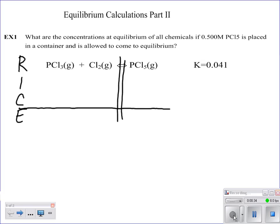And we read through it. It says, what are the concentrations at equilibrium of all chemicals if 0.5 molar PCl5 is placed into a container and is allowed to come to equilibrium. So I know that information, and I know my K value, and that's it. So from this, I can easily come up with my other initial concentrations. Nothing. I've got 0 of my chlorine and my PCl3.